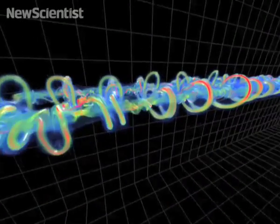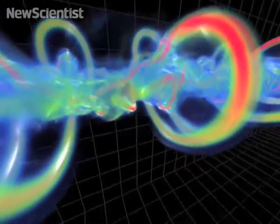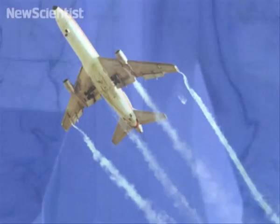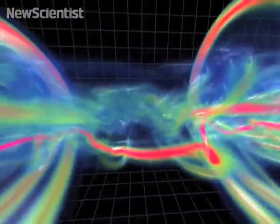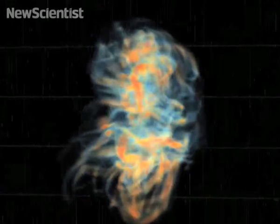Another simulation shows vortex tubes, like those produced by air turbulence over a plane's wing as it takes off. These animations could help scientists better understand how vortices evolve and become unstable.